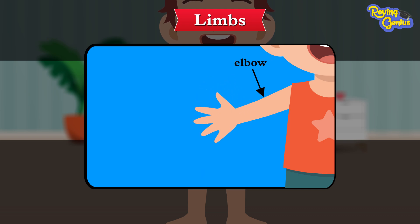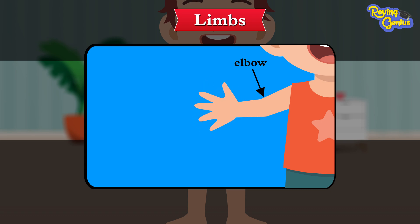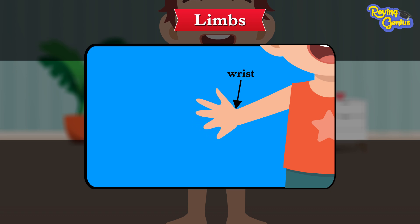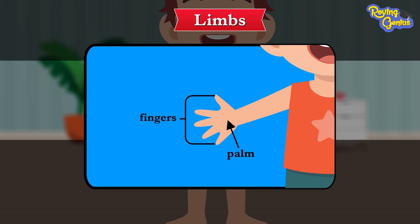Our elbow is a joint and we can bend our arm with it. Our wrist is a joint that connects our hand and arm. We can find our palm and fingers on our hand.